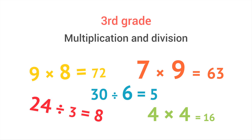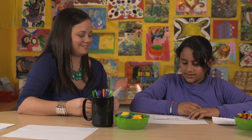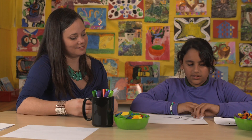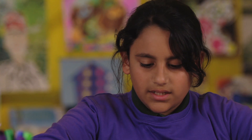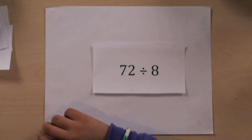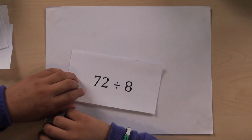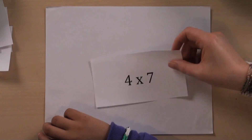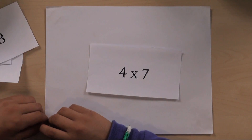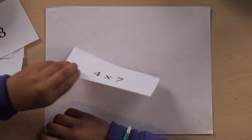Some things haven't changed since you were in school. Third grade is still the year of multiplication and division. 9 times 8 equals 72. 8 times 5 equals 40. 72 divided by 8 equals 9. Your third grader will learn to multiply and divide within 100.